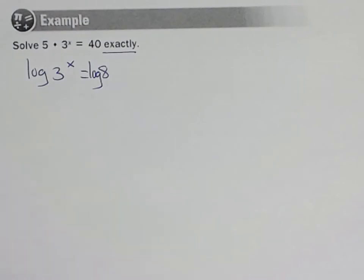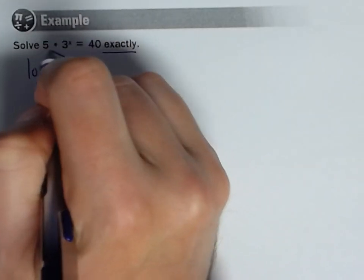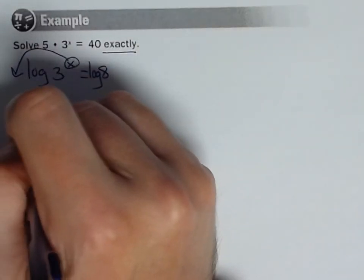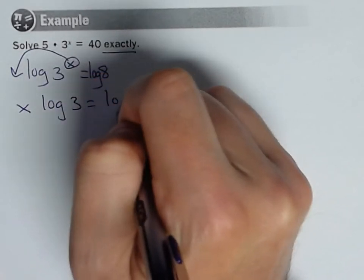Let's do the log of both sides. And again, it's not like 8 times the log or log times—it's the log of both sides. Now what that allows us to do is bring our variable out front, that exponent. So we now have x times log of 3 equals log of 8.